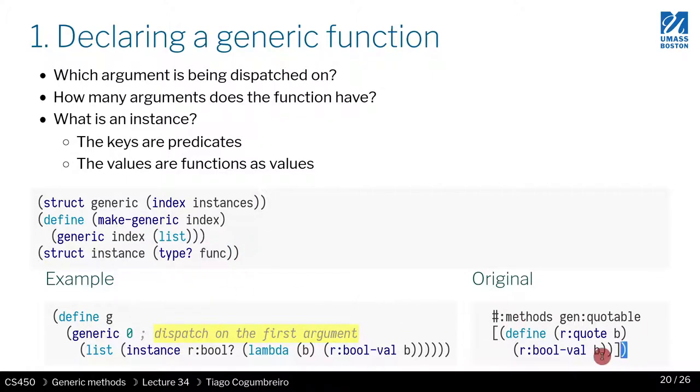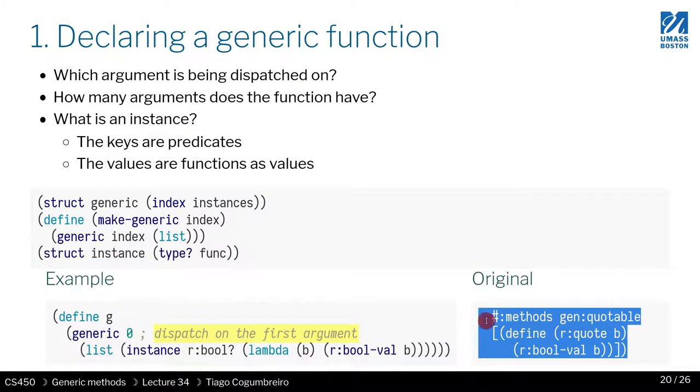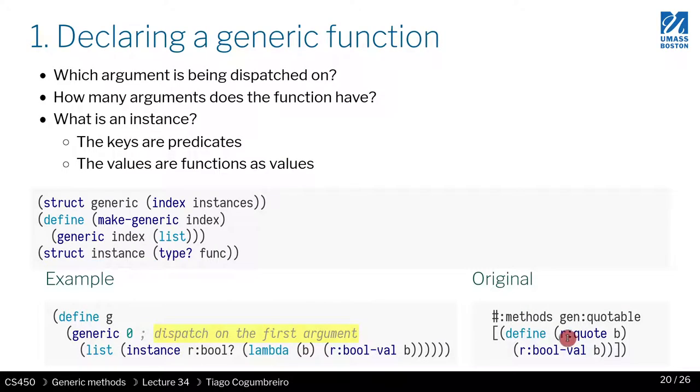So if we want to define a particular case, I'm defining the method for quotable or boolean. The way we do it is, given some generic, we say that we want to dispatch on the first argument, and then we could initialize it with a boolean. And here is the implementation, given a b, it invokes the vol of b.